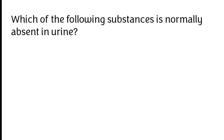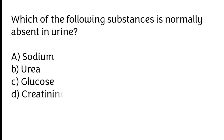Which of the following substances is normally absent in urine? A) Sodium, B) urea, C) glucose, D) creatinine.